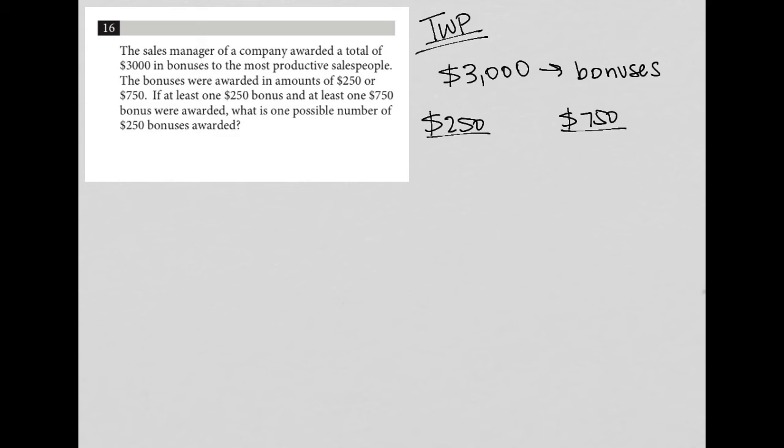If at least one $250 bonus and at least one $750 bonus were awarded, I'm going to put some marks here. So let's say I have one of those and one of those. What is one possible number of $250 bonuses awarded? Well, one possible—what is one possible number? That means there are many correct answers, right? So if it's asking you for only one possible number, that means there are more than just the one that you choose.